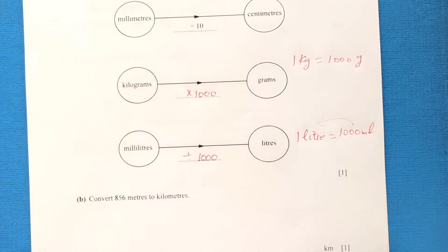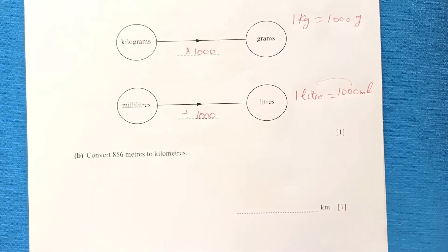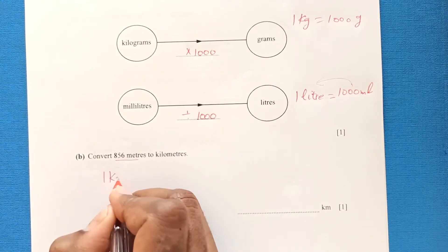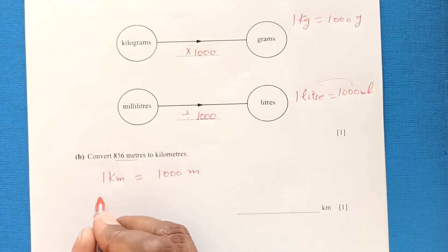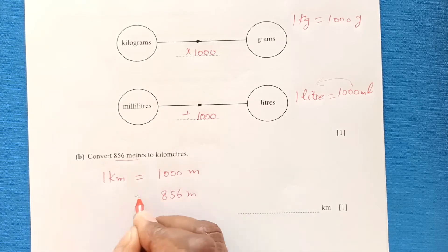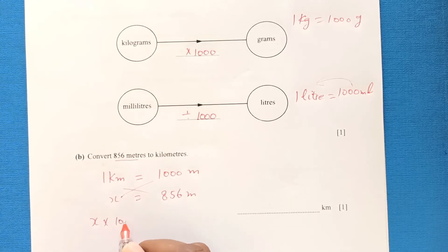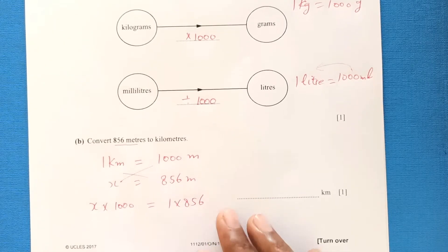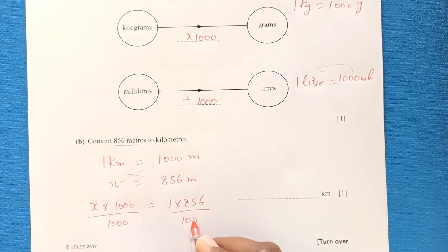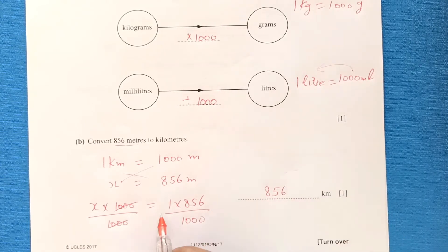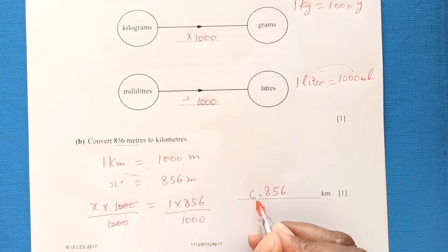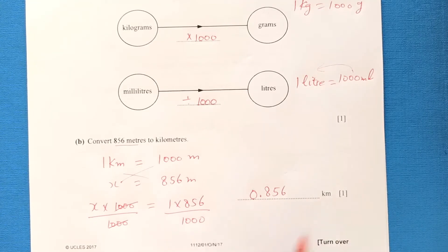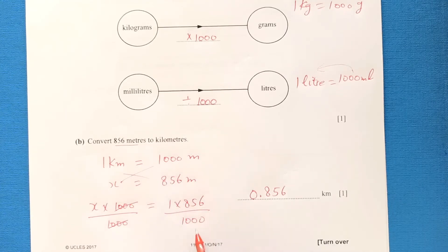Part b: convert 856 metres to kilometres. Since 1 kilometre equals 1000 metres, we divide 856 by 1000. There are three zeros, so we place the decimal three places from the right, giving 0.856 kilometres. You can also directly divide 856 by 1000 to get the same answer.